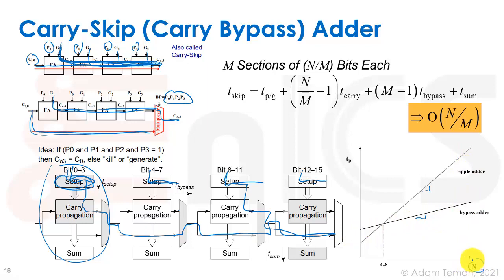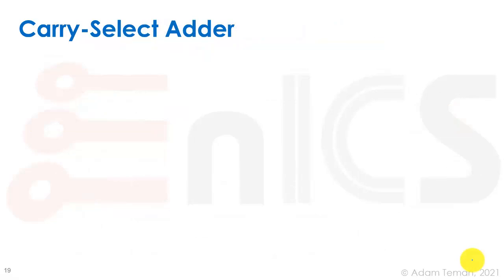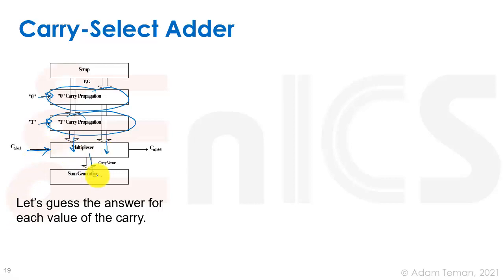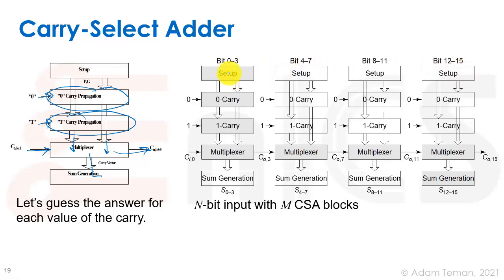That's one way — exploiting parallelism during initial propagations. A very similar approach with a different twist is the carry select adder. Here we say: the carry-in was either zero or one, so let's add redundant hardware and compute both cases simultaneously, then use the actual carry-in to select the correct result with a multiplexer.